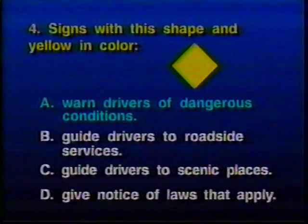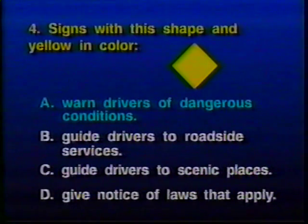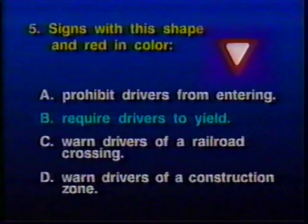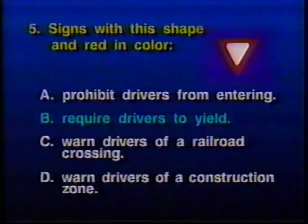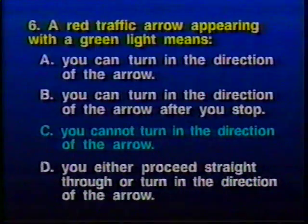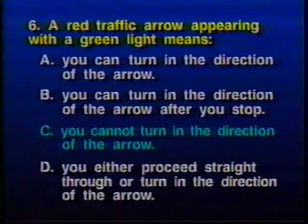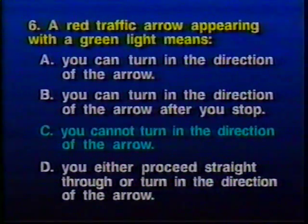Question four: The correct answer is A — a yellow diamond-shaped sign with black lettering always indicates a potentially dangerous situation; caution is called for. Question five: The correct answer is B — a yield right-of-way sign means a driver must slow, check for possible conflicts, and be prepared to stop if necessary. Question six: The correct answer is C — a red arrow used with a traffic light has the same meaning as the traffic light: green arrow means proceed if clear, yellow means be prepared to stop, red means stop. Question seven: The correct answer is A — research shows vehicles with headlights on during the day are involved in approximately seven to twenty-three percent fewer crashes.